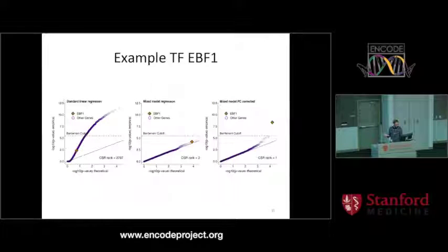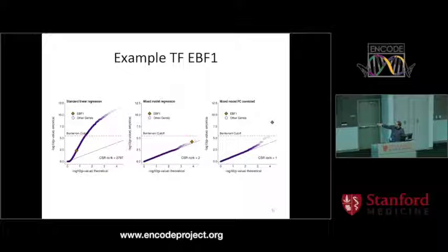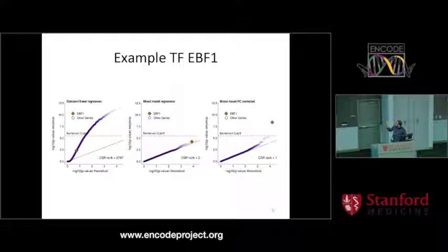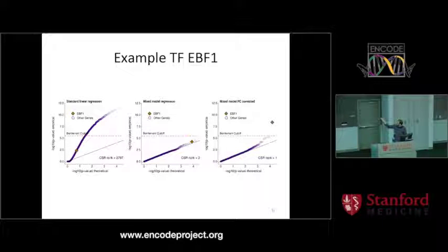Here's an example with transcription factor EBF1. If you do this regression approach across all the genes and check the p-value distribution, with standard linear regression you have heavy inflation and the true factor is somewhere in the middle. If you use the mixed model approach, the inflation goes away: all the genes follow the null distribution and the correct annotated factor is in the tail. With additional data processing, you can even get it above the Bonferroni cutoff. Since we know the annotated factor, we can tell just by its position — second in the middle example — that something interesting is going on.